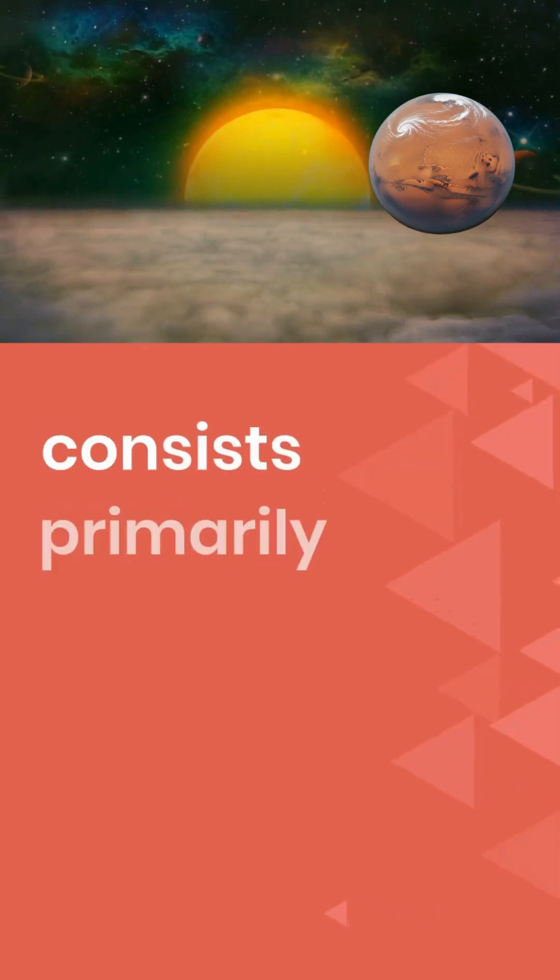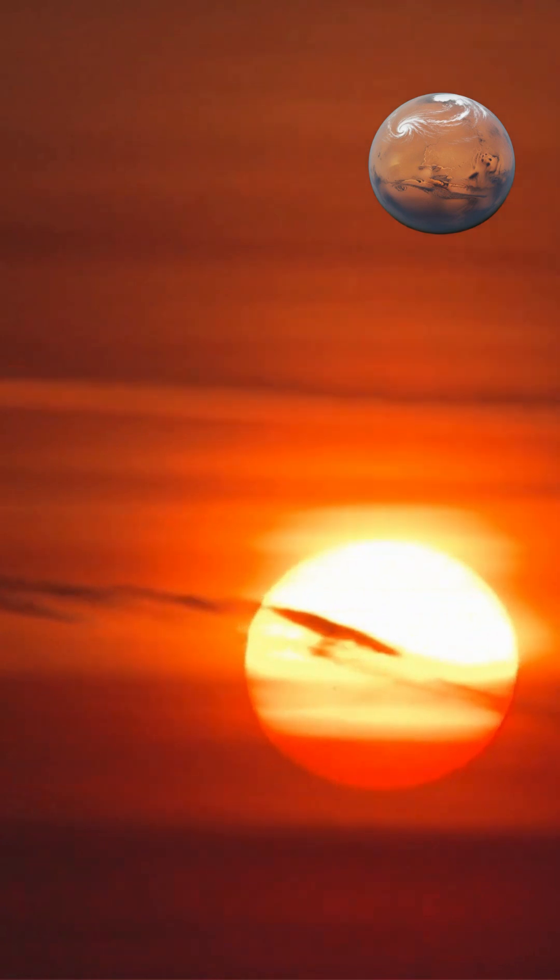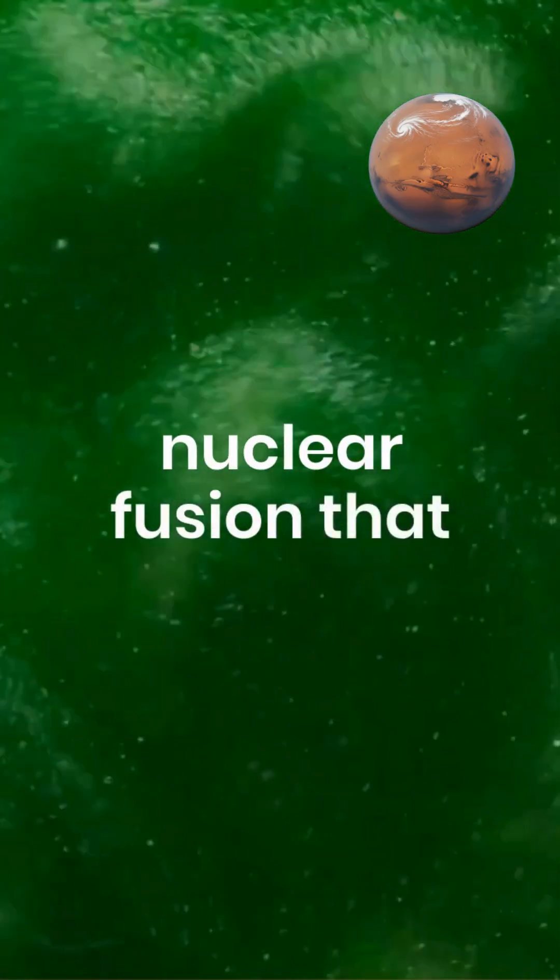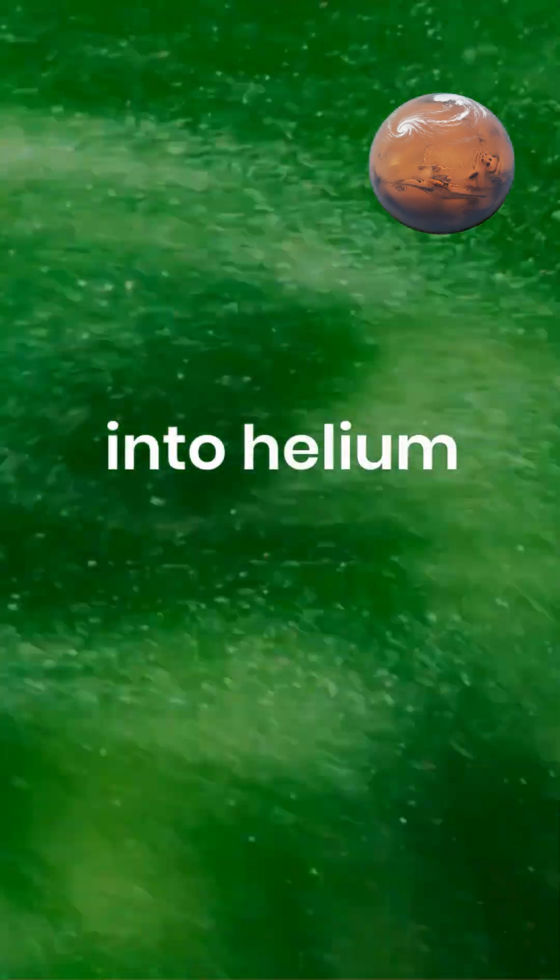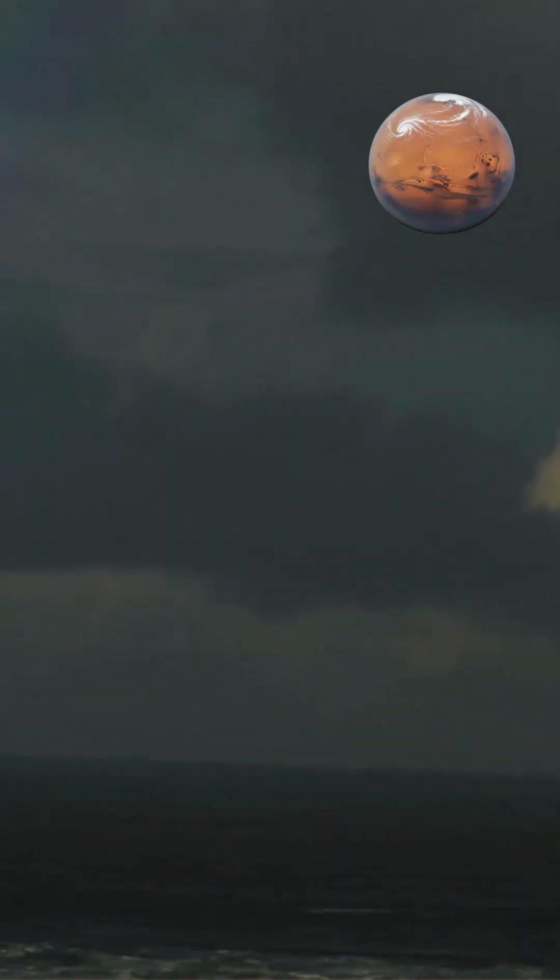The Sun's core consists primarily of hydrogen plasma at extraordinary temperatures and densities, undergoing constant nuclear fusion that converts hydrogen into helium while releasing the tremendous energy that powers our solar system and sustains life on Earth.